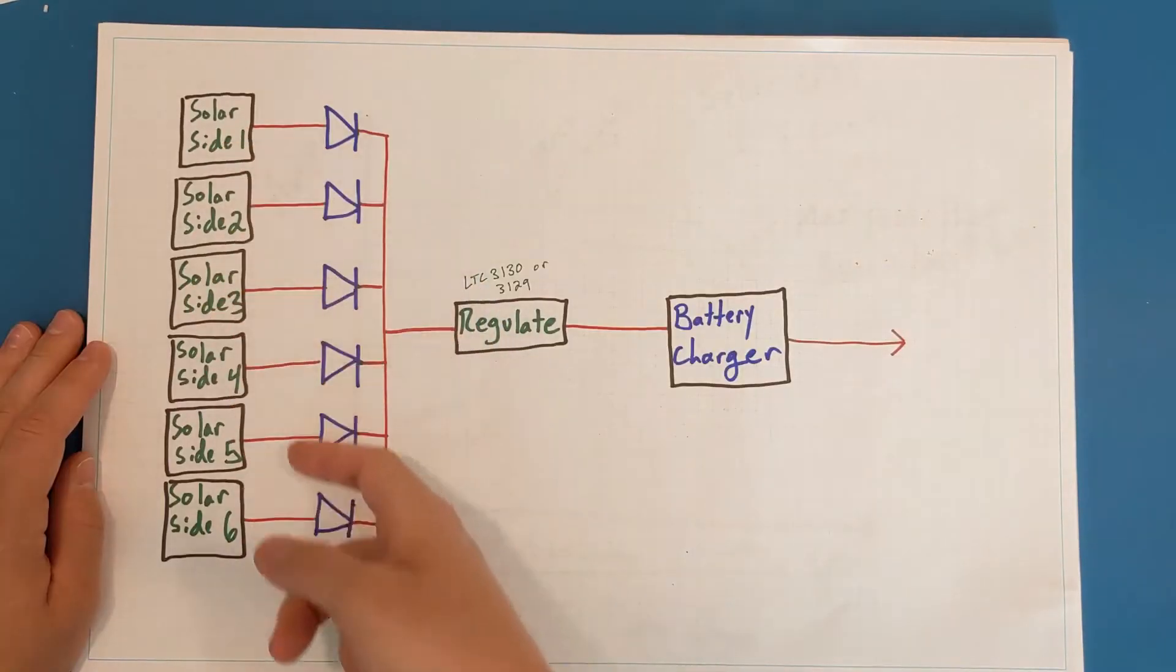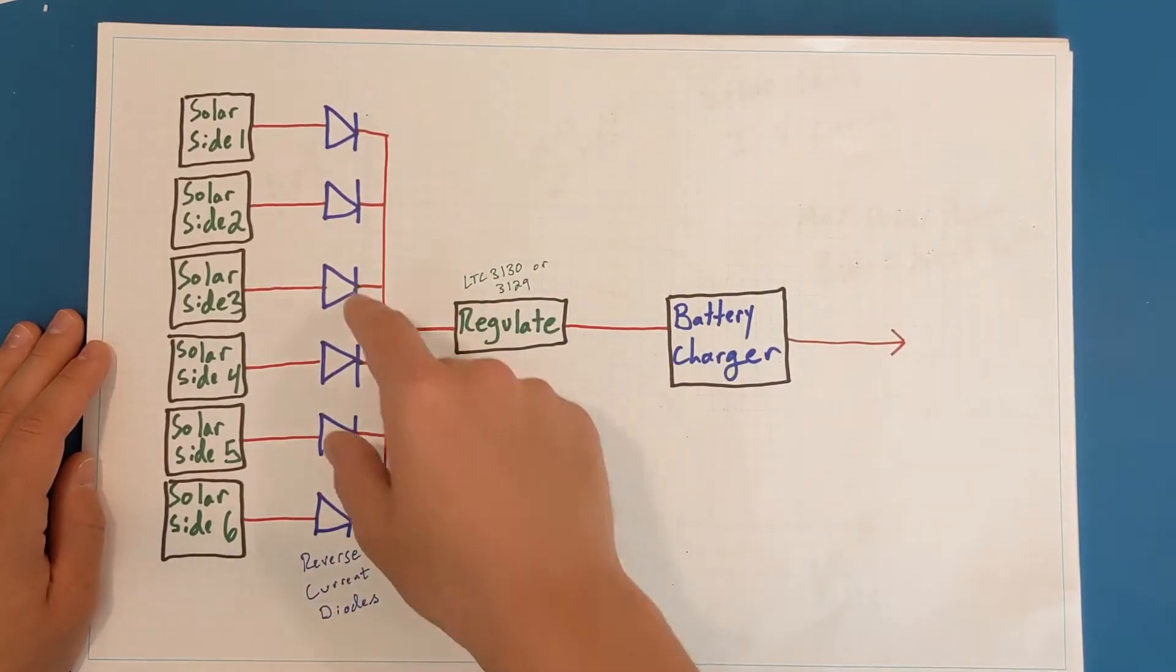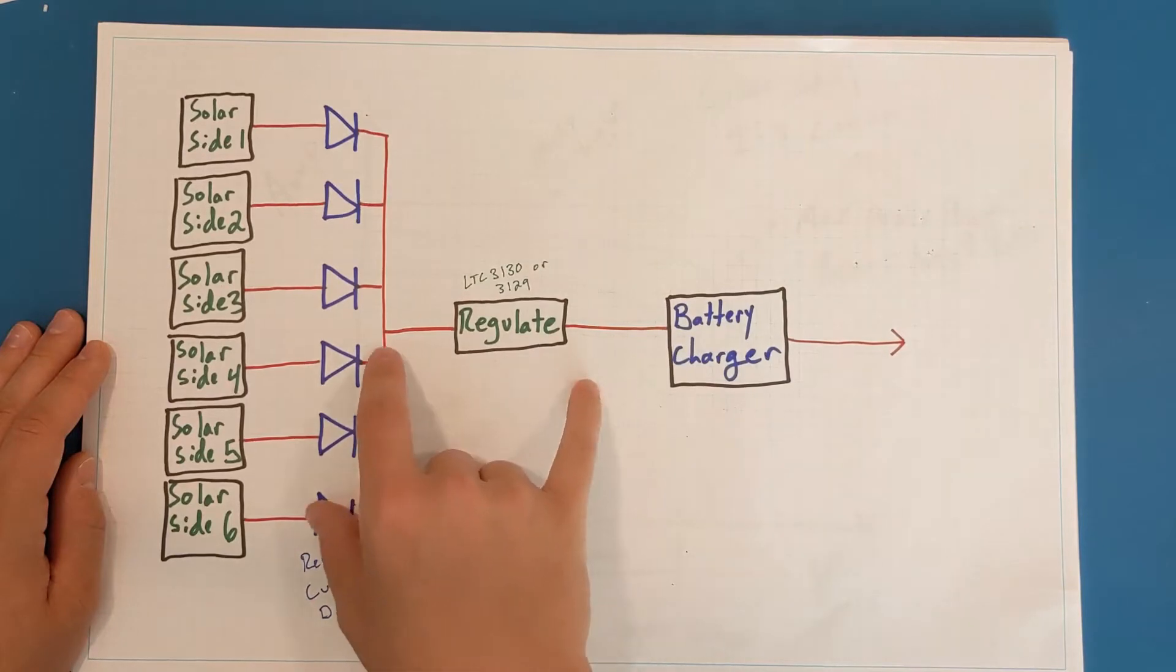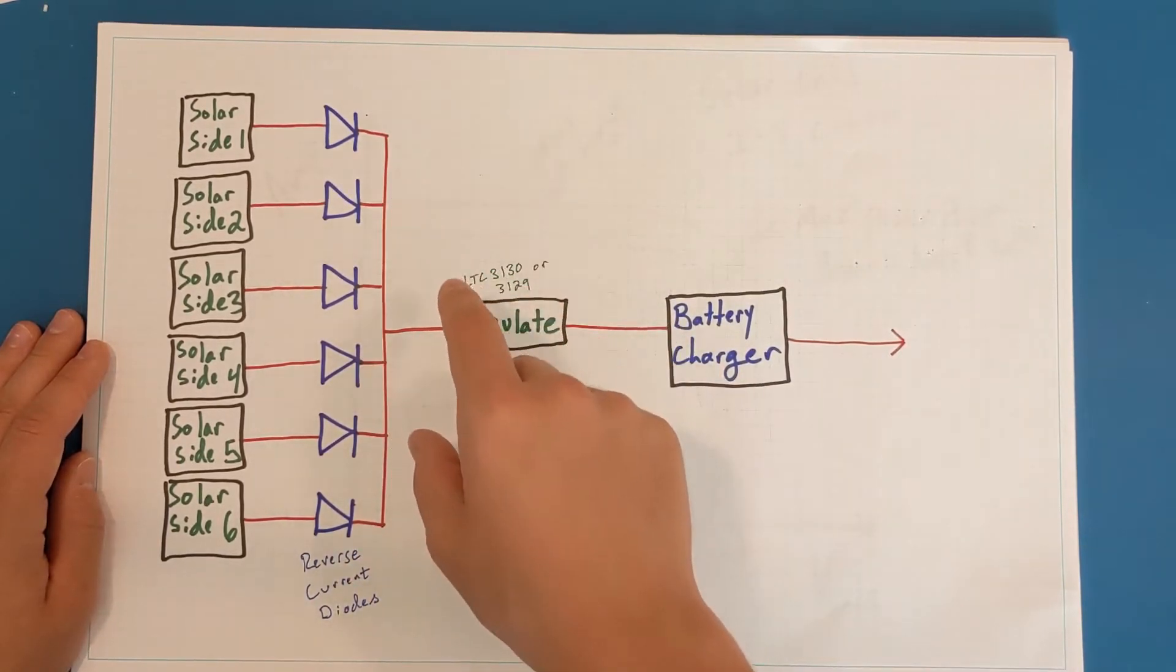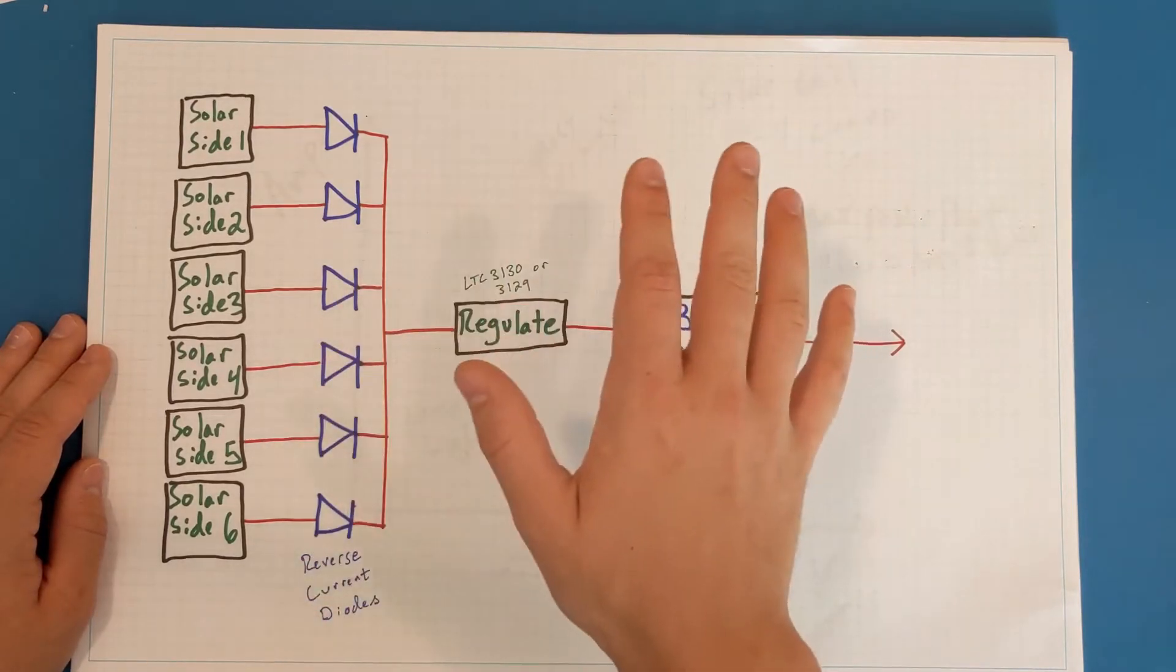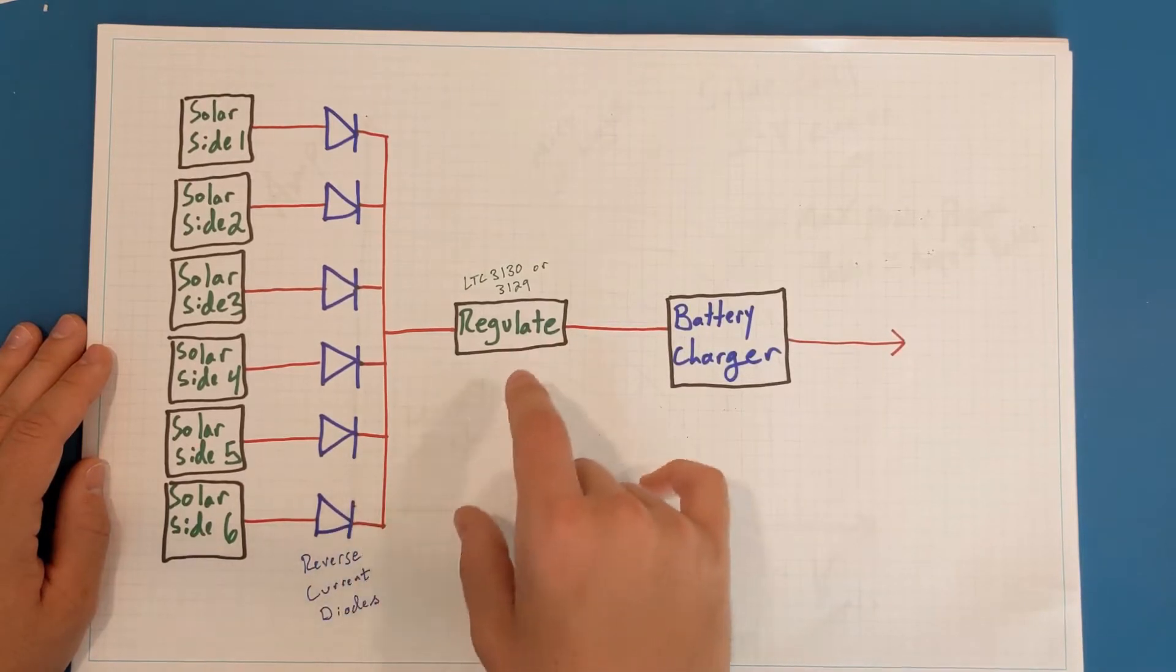In this layout, I still have the six solar inputs. However, they're all feeding into these reverse current blocking diodes or just Schottky diodes, and then they are all connected in parallel, and then they go into just one regulator. Notice in this that the ideal diodes are out of the picture. I don't need those anymore since I'm just using low forward voltage Schottky diodes to OR together all of the solar cells.